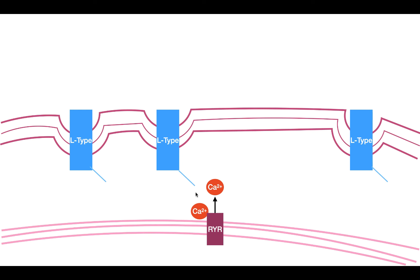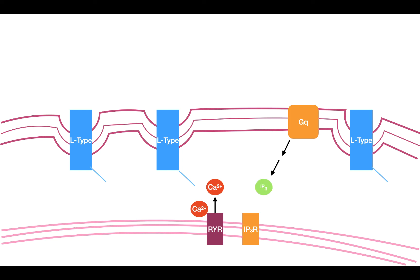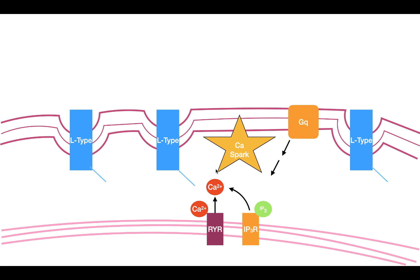But that's not the only way. Another way is through the GQ receptor, which is a G-protein coupled receptor. When an agonist binds to it, the GQ protein is activated and activates an enzyme called phospholipase C. Phospholipase C produces a specific molecule called IP3, which moves to the IP3 receptor, opens it, and allows calcium to flow out of the sarcoplasmic reticulum. These two mechanisms — CICR and the IP3 method — both bring calcium from the sarcoplasmic reticulum into the cytosol, producing what is called a calcium spark.